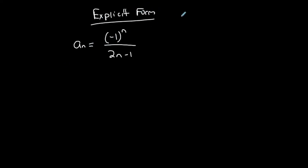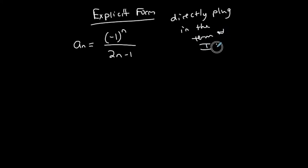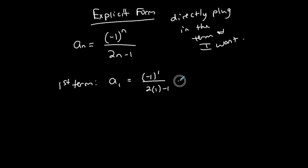If I want the first term, I just replace n with one. Everywhere I see n, I replace it with one and simplify. So this is negative one over two minus one, which is negative one over one, or negative one. So the first term in this sequence, represented by this formula in explicit form, is negative one.